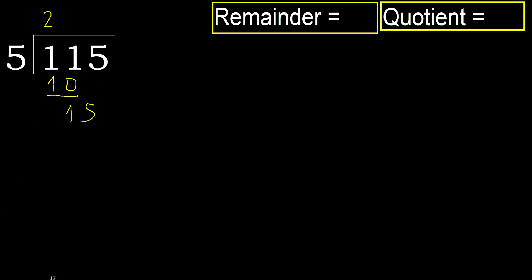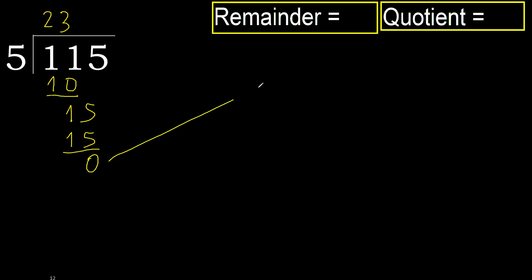Next, bring down: 15. 5 multiplied by 4 is 20 — 20 is greater. Multiply by 3: 15 is not greater. Subtract: remainder is 0. There is no next digit, therefore finish.